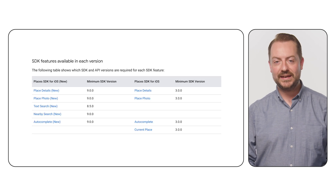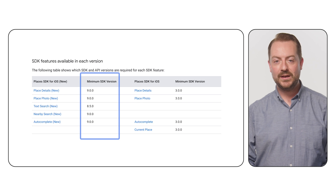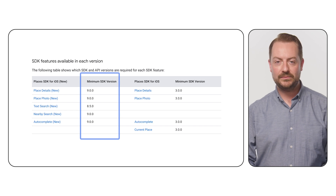Firstly, ensure your app is using the correct SDK version. Most Places new features are available in SDK version 9 or newer, with text search new available from version 8.5.